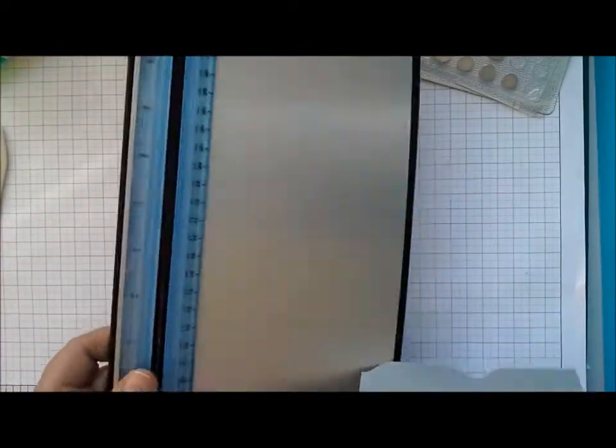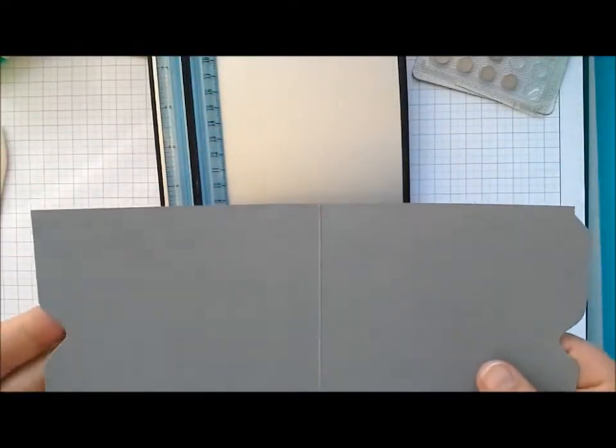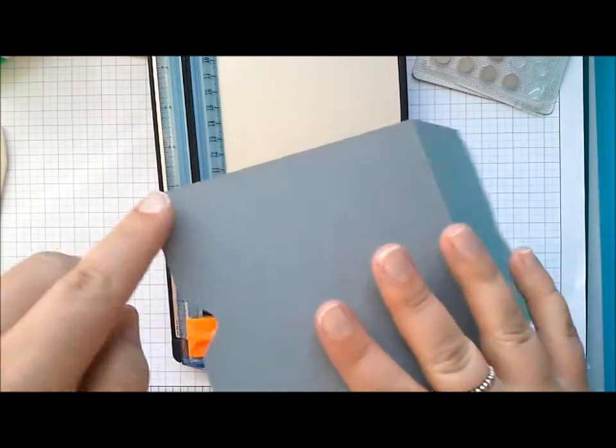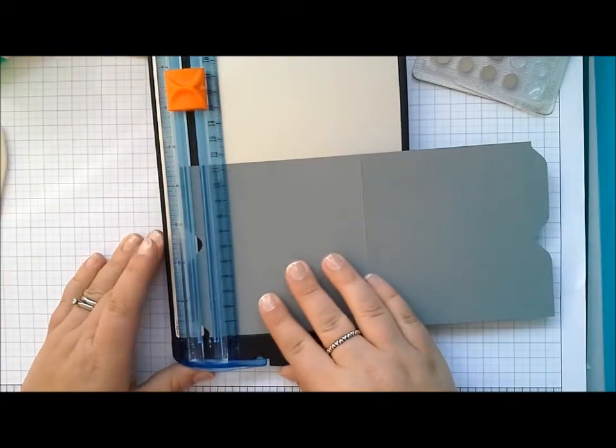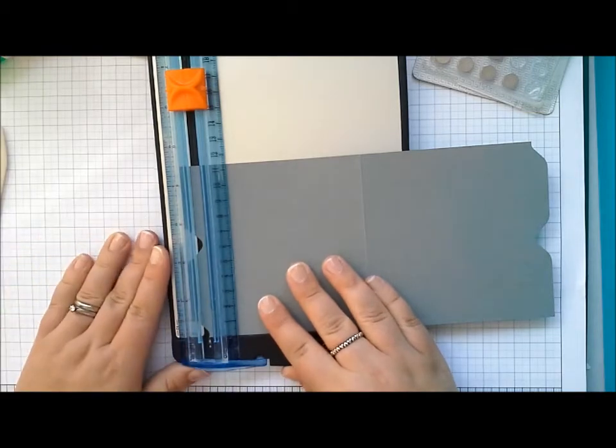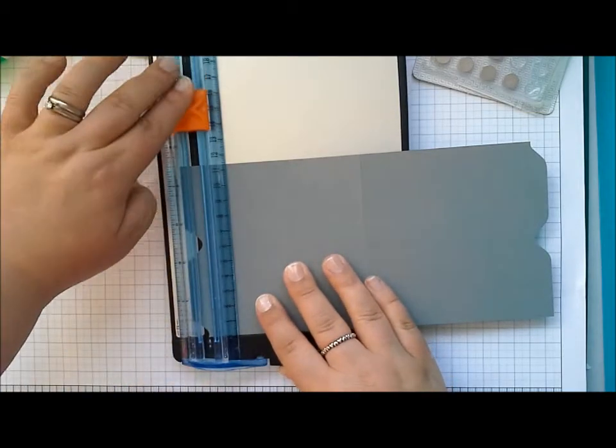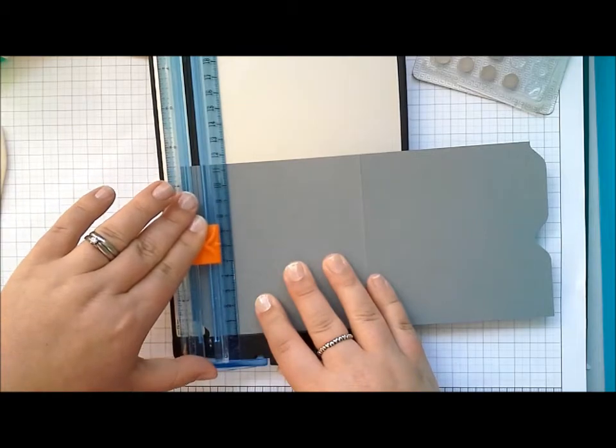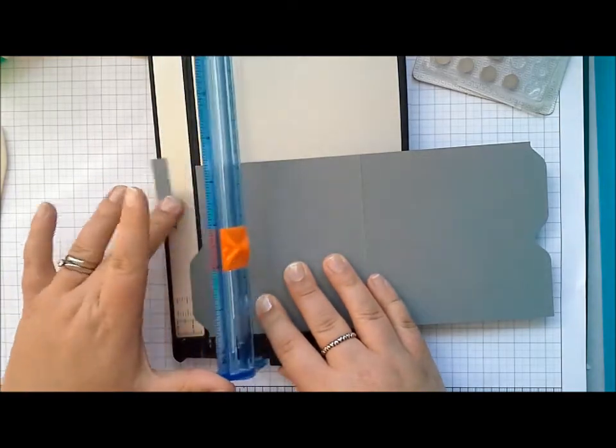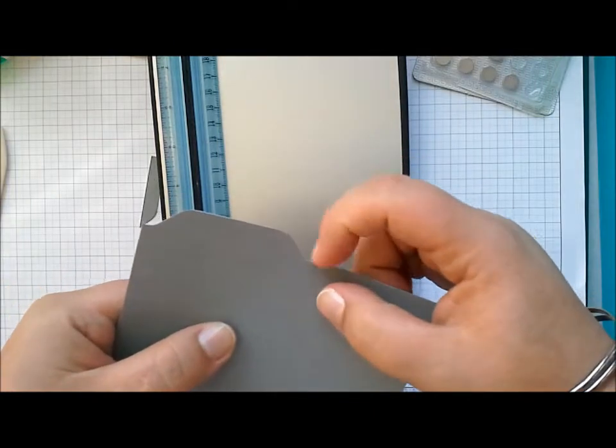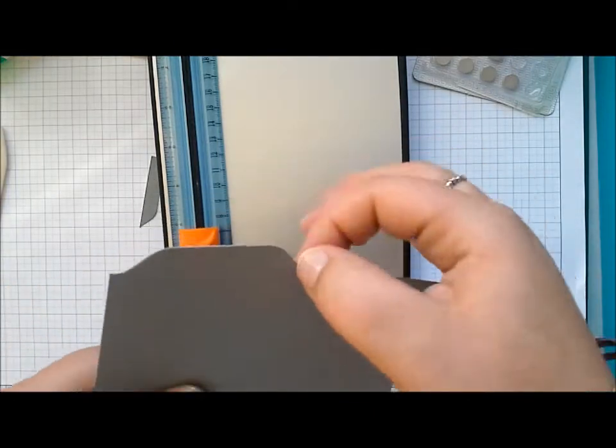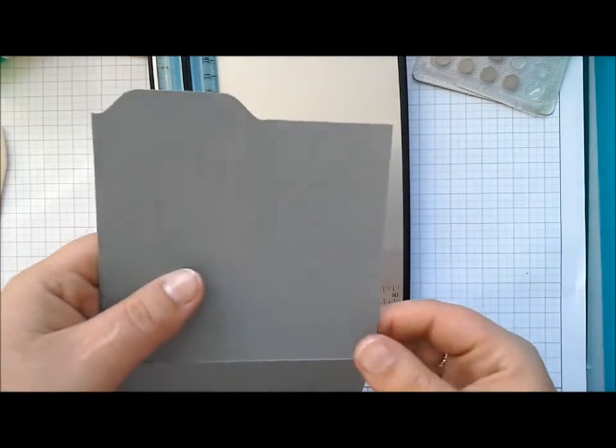Then you're just going to take your paper trimmer and trim away this excess edge. I like to go top to bottom. Line it up with the channel on your trimmer and you can feel the trimmer sort of stop when you stop hitting cardstock. You'll often get this little scrubby edge that I just get rid of with my fingernail or a filing block.